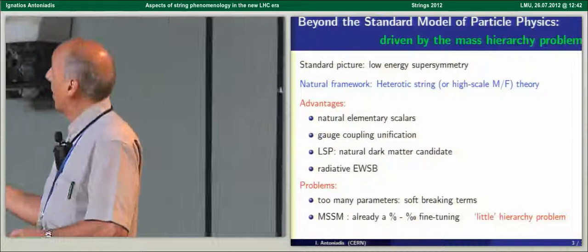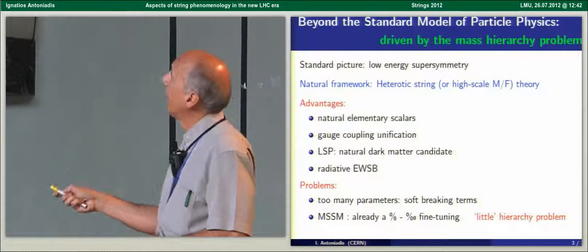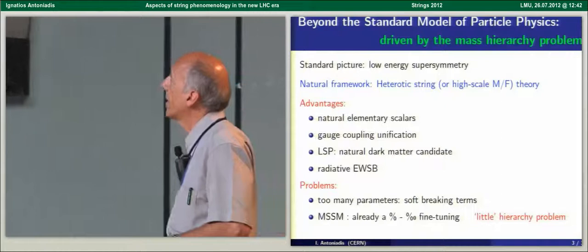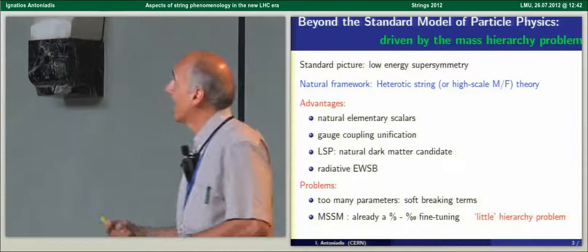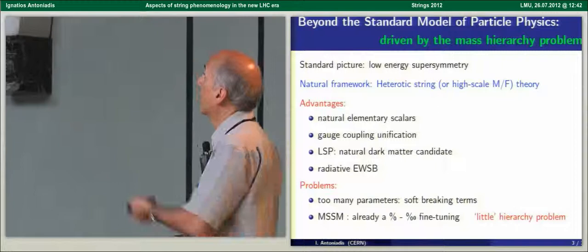And all of us know the advantages of supersymmetry, starting with introducing natural elementary scalars, gauge coupling unification, dark matter candidate, provides a mechanism for radiative electroweak symmetry breaking, and so on. The main problem is of course that it has not been seen, and this introduces already a tension and some degree of fine-tuning, which is called the little hierarchy problem.